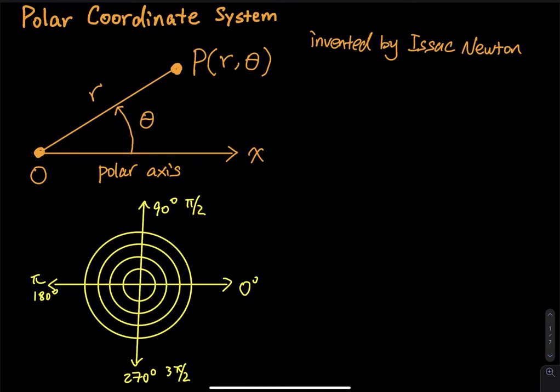So the graphing paper that we use, the one that has an x and y-axis, that is called rectangular coordinate system. Rectangular coordinate system has another name. We call that xy plane a Cartesian plane. So in this section, we are going to discuss polar coordinate system.